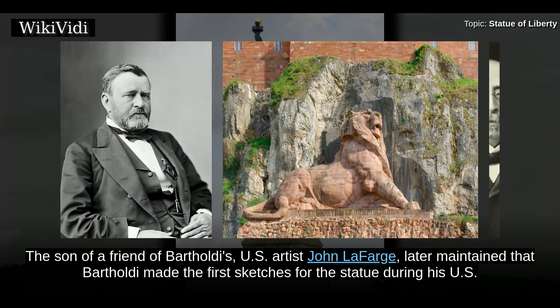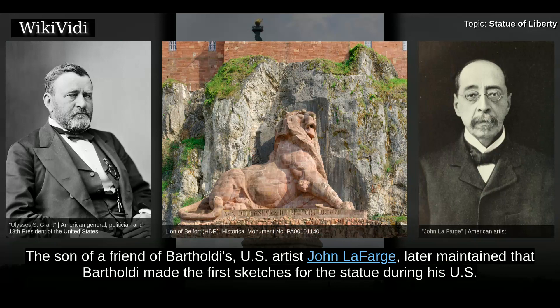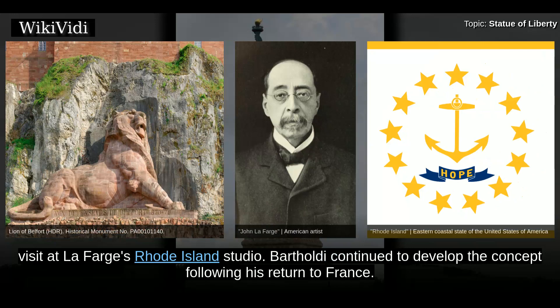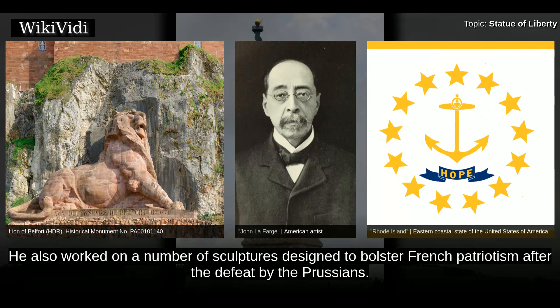Bartholdi had made a first model of his concept in 1870. The son of a friend of Bartholdi's, U.S. artist John LaFarge, later maintained that Bartholdi made the first sketches for the statue during his U.S. visit at LaFarge's Rhode Island studio. Bartholdi continued to develop the concept following his return to France. He also worked on a number of sculptures designed to bolster French patriotism after the defeat by the Prussians.